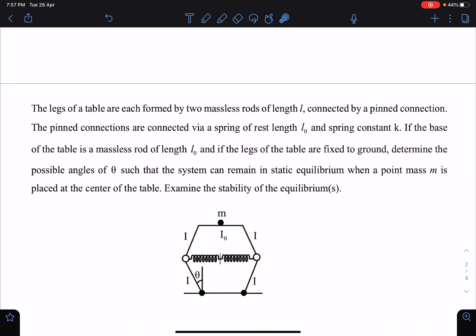The legs of the table are connected by pinned connections or hinges. The pin connections are connected via a spring of length l naught and spring constant k. So you can see here, and if the base of the table is a massless rod of length l naught, so this length is given as l naught.